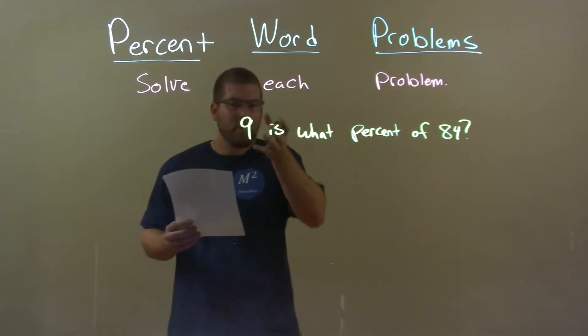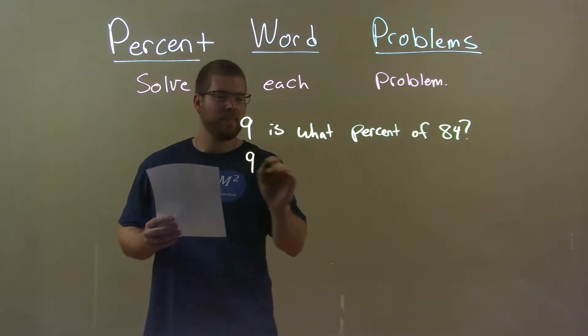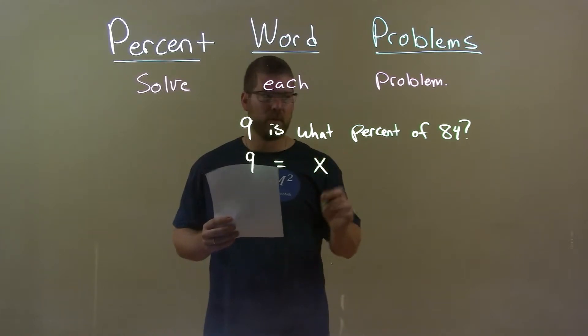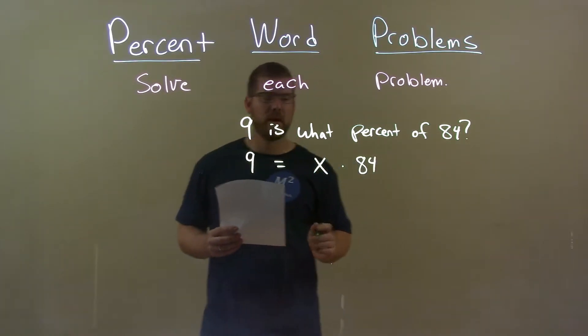What we want to do is convert this to an equation. So 9 equals x times 84. That's it.